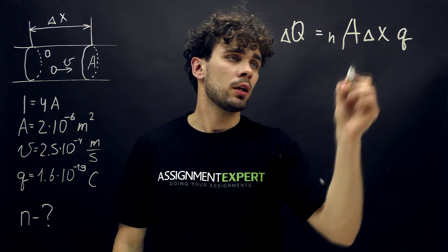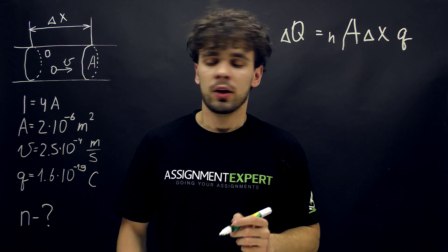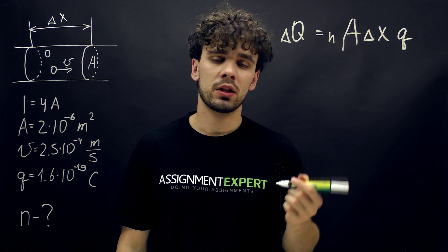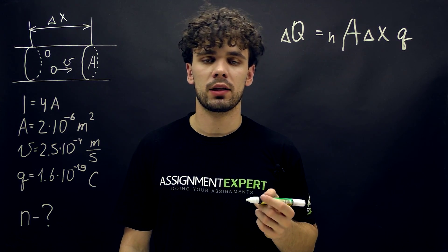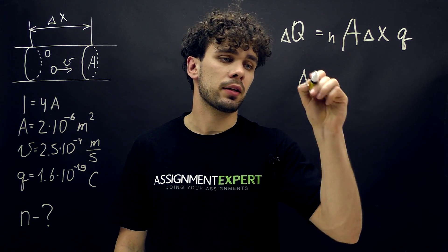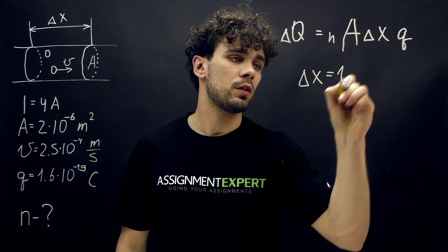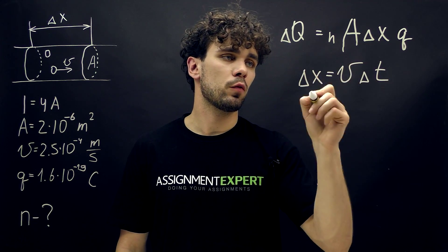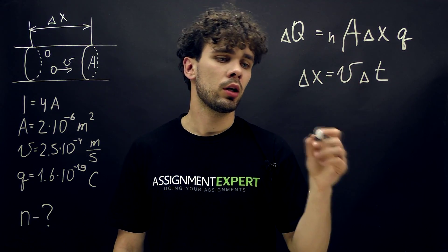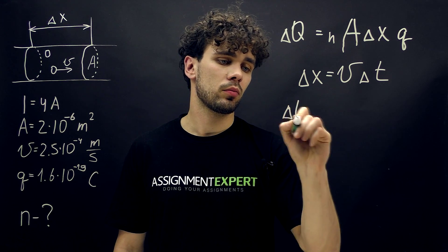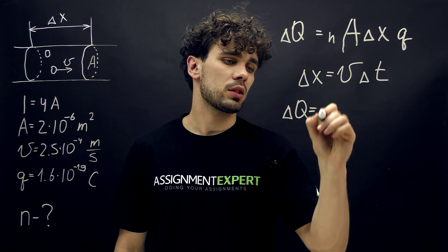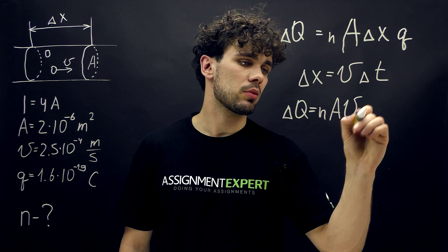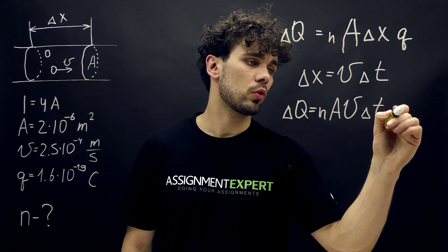Now let's see what ΔX is. Knowing the average speed of electrons, we can find ΔX — the distance they cover in time ΔT — as ΔX equals V times ΔT. Now we substitute this formula into our first formula to get ΔQ equals N times A times V times ΔT times Q.